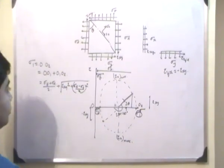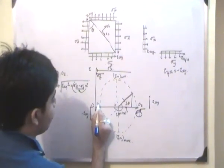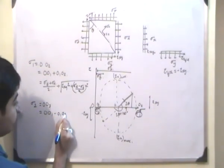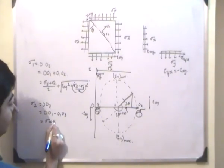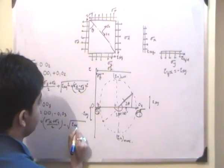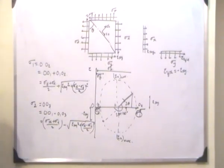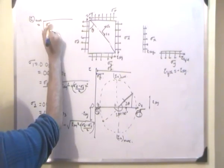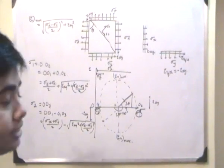So sigma-1 is essentially (sigma x + sigma y) / 2 plus the radius. Sigma-2 equals O to O3, which is O to O1 minus O1 to O3, giving (sigma x + sigma y) / 2 minus the square root of ((sigma x − sigma y) / 2)² + tau_xy². The maximum value of shear stress, tau max, is equal to the radius: the square root of ((sigma x − sigma y) / 2)² + tau_xy². Thanks a lot for listening.